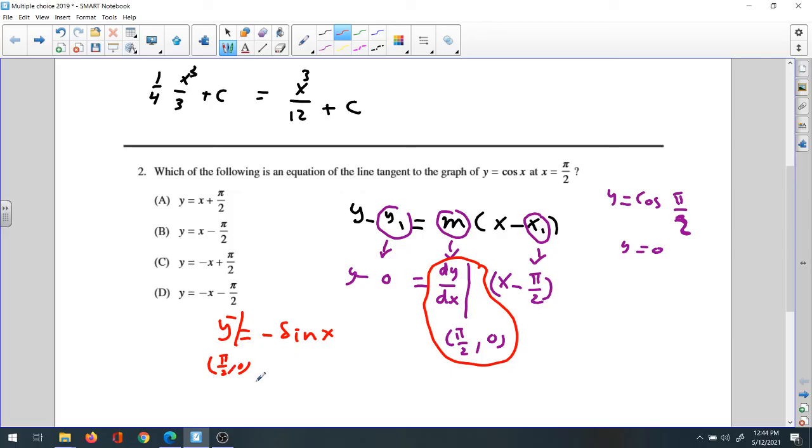x equals π/2. So it would be negative sine π/2, and you know π/2, sine π/2 is 1, so it will be negative 1. So the slope here would be negative 1.